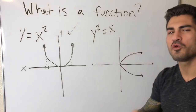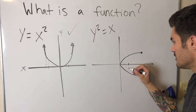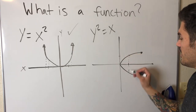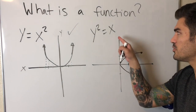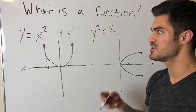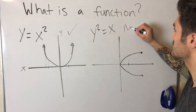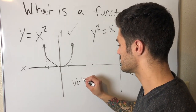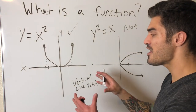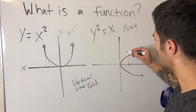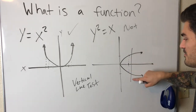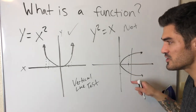For y² = x, if I plug in x = 4, I need to find what squares to give 4. Both 2 and -2 squared equal 4, so I'm putting in 4 and getting out both -2 and 2. That input has more than one output, so this is not a function. The simple way to check this is called the vertical line test: if a vertical line intersects the graph at two or more points, it is not a function.